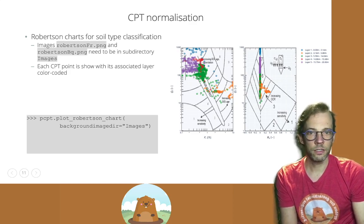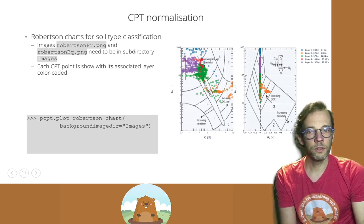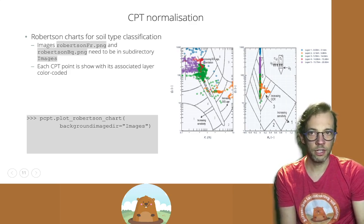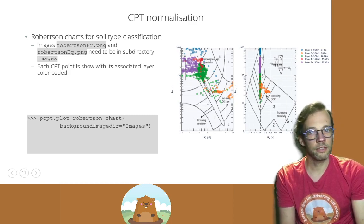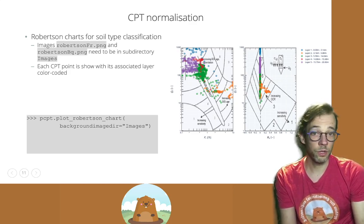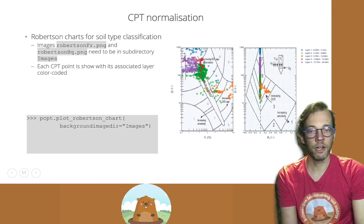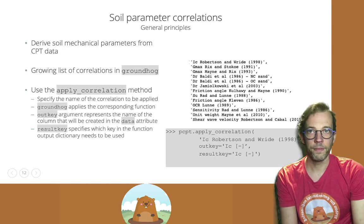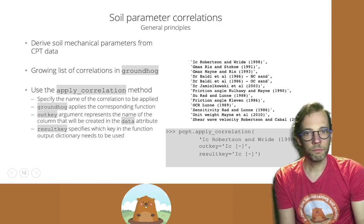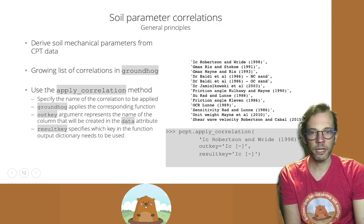So for each layer, the data points will be color coded, as you can see on the right hand side. And those data points are then overlaid onto the Robertson chart. So if you execute the method plots Robertson chart and then supply the directory in which those PNG image files are included, you will get the graph on the right hand side and see where the largest proportion of data points in your layered plots.